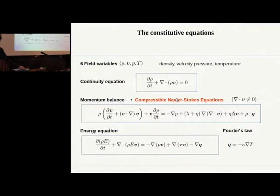Here are the constitutive equations. We have six field variables: the density, the velocity vector, the pressure field, the temperature field. The equation of continuity, the momentum balance, also known as the compressible Navier-Stokes equation, and an energy equation.